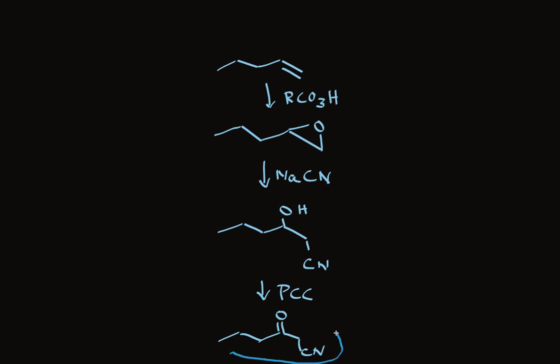This cyanoketone is our target. We start with a compound that has the right number of carbon atoms — this alkene — and we use chemistry that puts the functional groups on adjacent carbons.